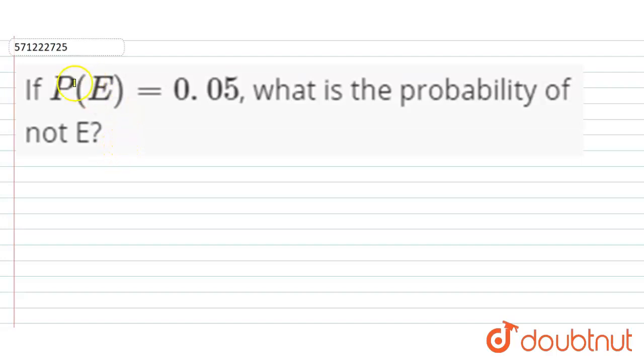Hi students, our question here is if P(E) is equal to 0.05, what is the probability of not E?